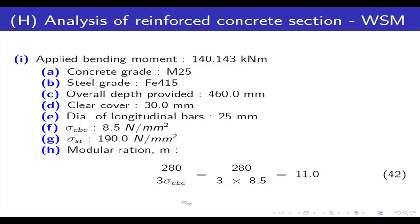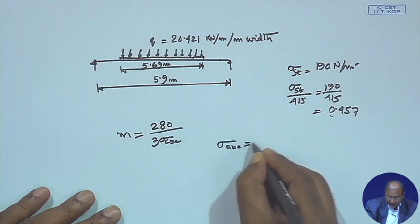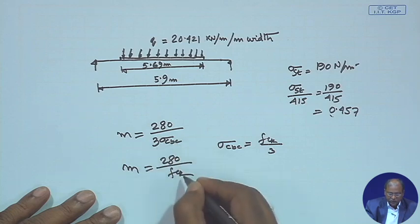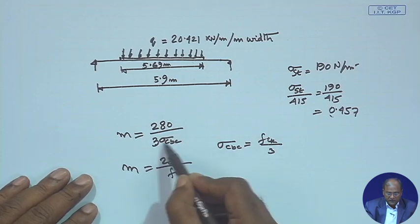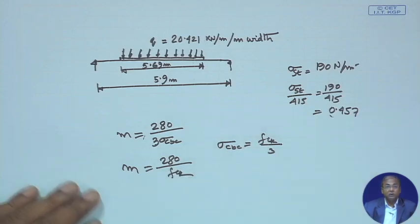Modular ratio m = 280 / (3 × sigma CBC) = 280 / (3 × 8.5) = 11. For IRC code, since 3 × sigma CBC = FCK, m = 280 / FCK. So for IRC 21, m would be 280/25 ≈ 11.5. Everything can be expressed in terms of FCK only.